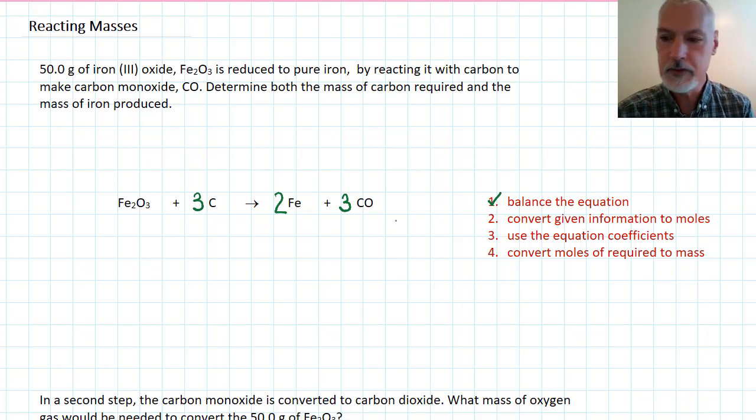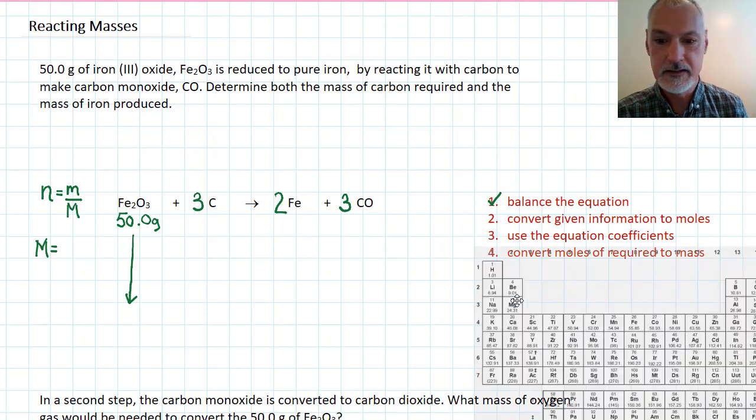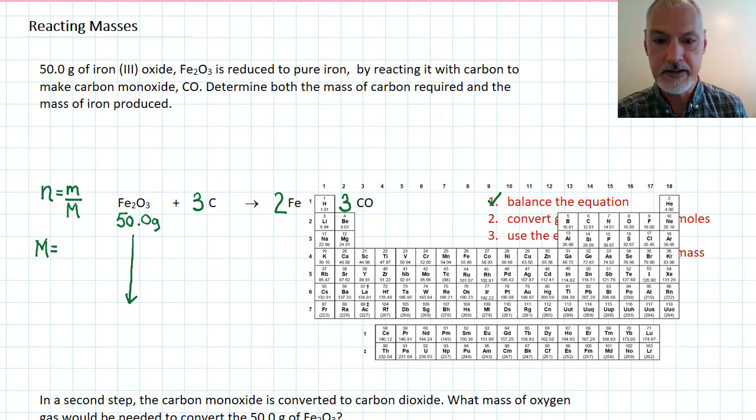Step two is to convert the given information into moles. Well, I'm given 50 grams of that material, and I want to take that and convert that into moles of iron oxide. To do that, I require one piece of information. What is the molar mass? Because we calculate the number of moles by taking the mass and dividing it by the molar mass. Now, you might recall, what we need to do to be able to do that is have access to our periodic table.